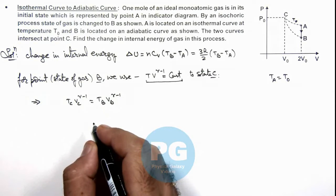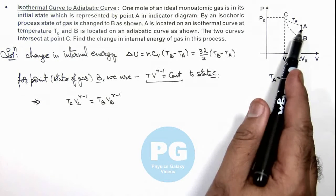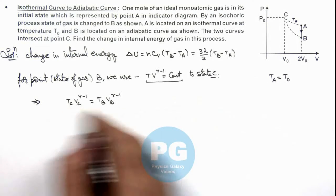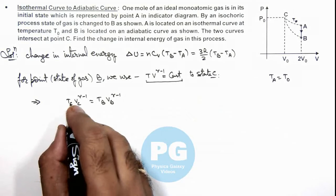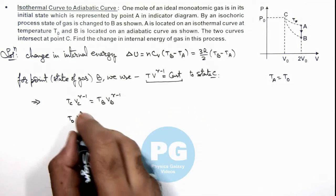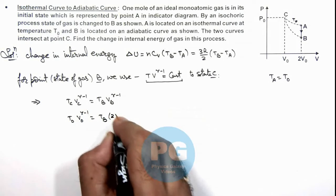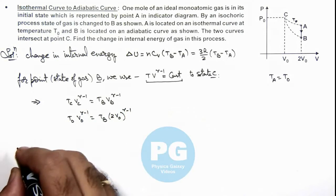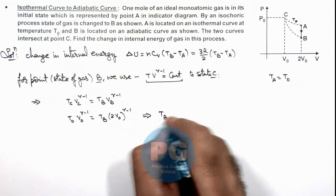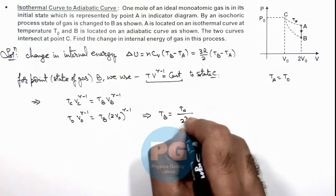In this situation, we are given that the volume of gas from C to B is double. So if we use the relation, this temperature TC is T₀, volume VC is V₀ to power γ-1 equals TB multiplied by 2V₀ to power γ-1. This will result as the value of TB which equals T₀ upon 2^(γ-1).